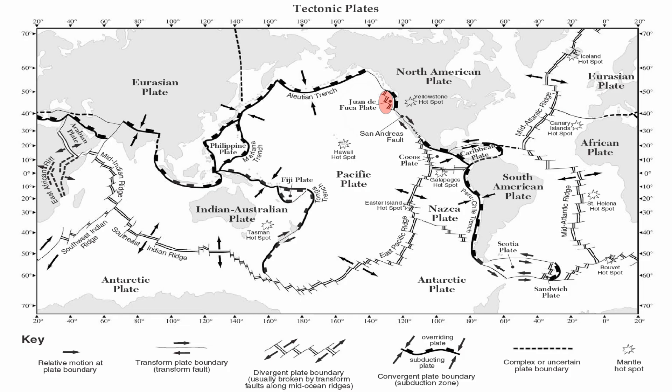We also have a small one called the Juan de Fuca Ridge, where the Juan de Fuca plate is moving away from the Pacific plate. There is also a small ridge system where the Sandwich plate is moving away from the Scotia plate. Look at the plate motion arrows — they tell you which plates are moving away from each other. The map key at the bottom shows the relative motion and the symbol for divergence.